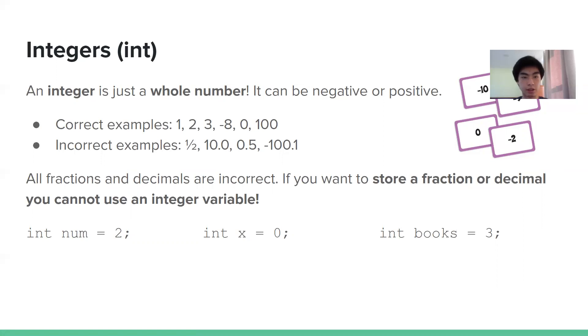But the interesting one here is 10.0. Now, you may think, well, it's a whole number, right? But it's got the point zero on the end, and integers can only store 10. So if you want to store 10.0, you would just write it as 10.